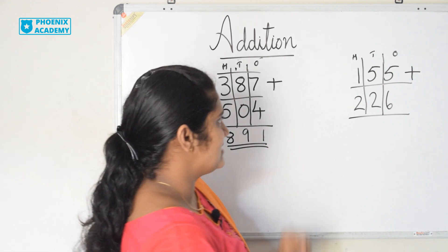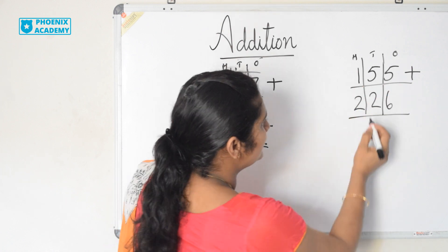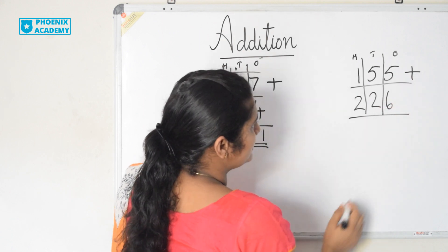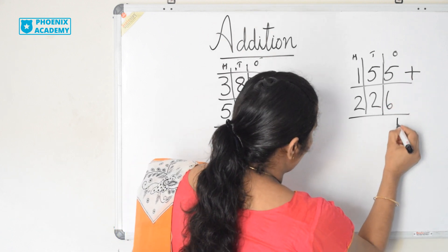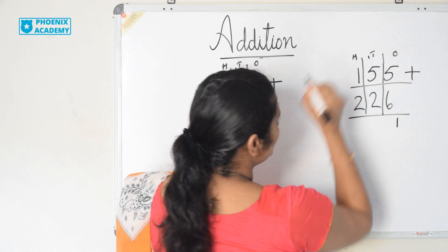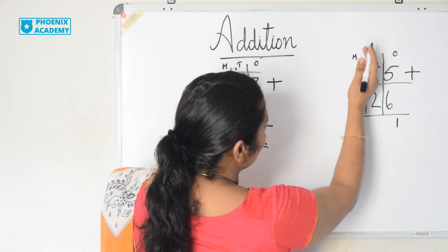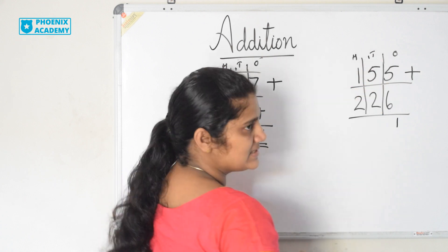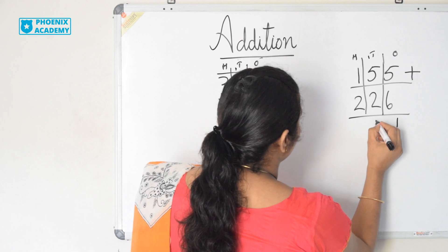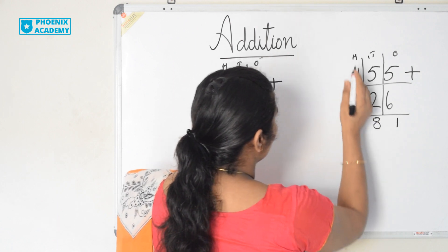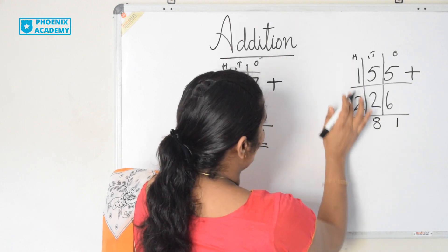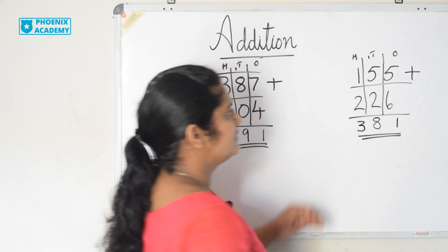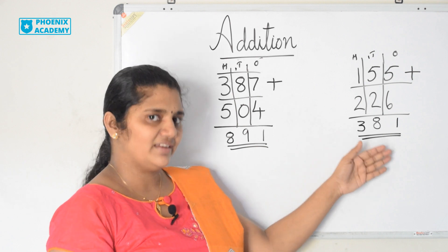Let's add 155 plus 226. 5 plus 6 is 11. So I write 1 here and 1 carry forwarded to the 10's place. Let's add the 10's. 1 plus 5 is 6. 6 plus 2 is 8. Let's add the 100's now. 1 plus 2 is 3. So the answer is 381.